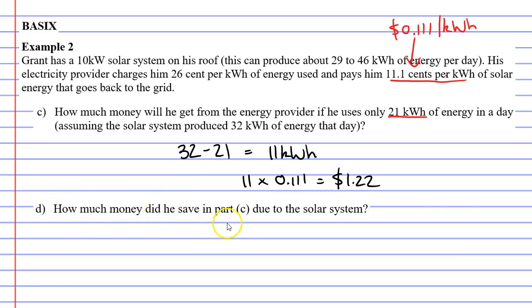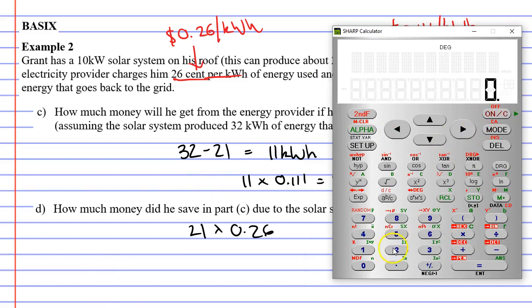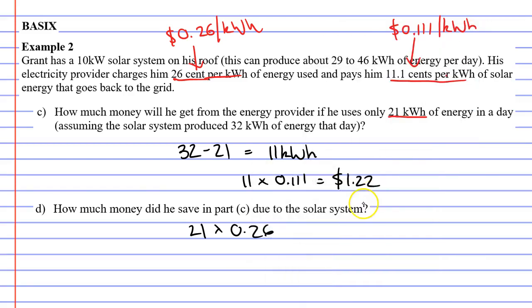How much money did he save in part C due to the solar system? Well, let's look at how much he would have got charged if he didn't have the solar panels. He used 21 kilowatt hours, and we know that they charge $0.26 per kilowatt hour. So let's multiply these together. 21 times 0.26. 21 times 0.26 equals $5.46.